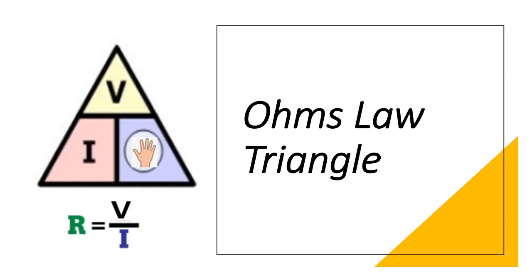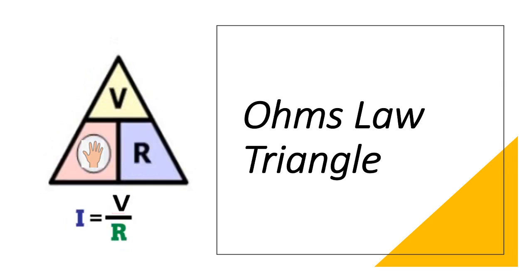If you know the voltage and current and want to know the resistance, cross out the R in the pyramid and calculate the remaining equation. Now if you know the voltage and resistance and want to know the current, cross out the I and calculate the remaining two symbols.